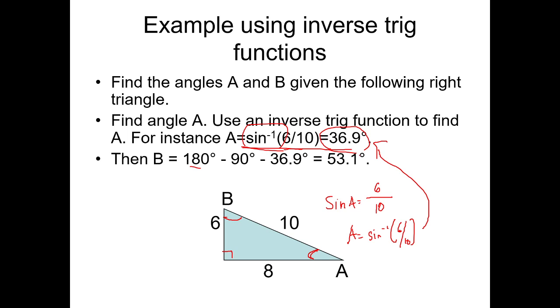Actually, to find angle B, you can do the same. If you use sine B, SOHCAHTOA, opposite of B is 8, hypotenuse is 10. Therefore, B is equal to arc sine of 8 over 10.